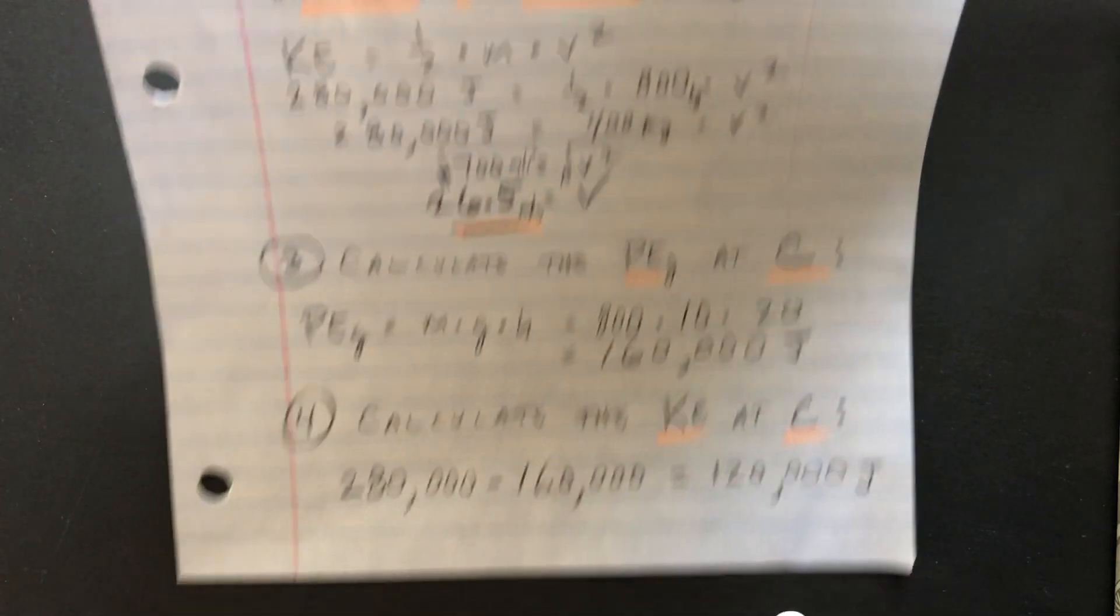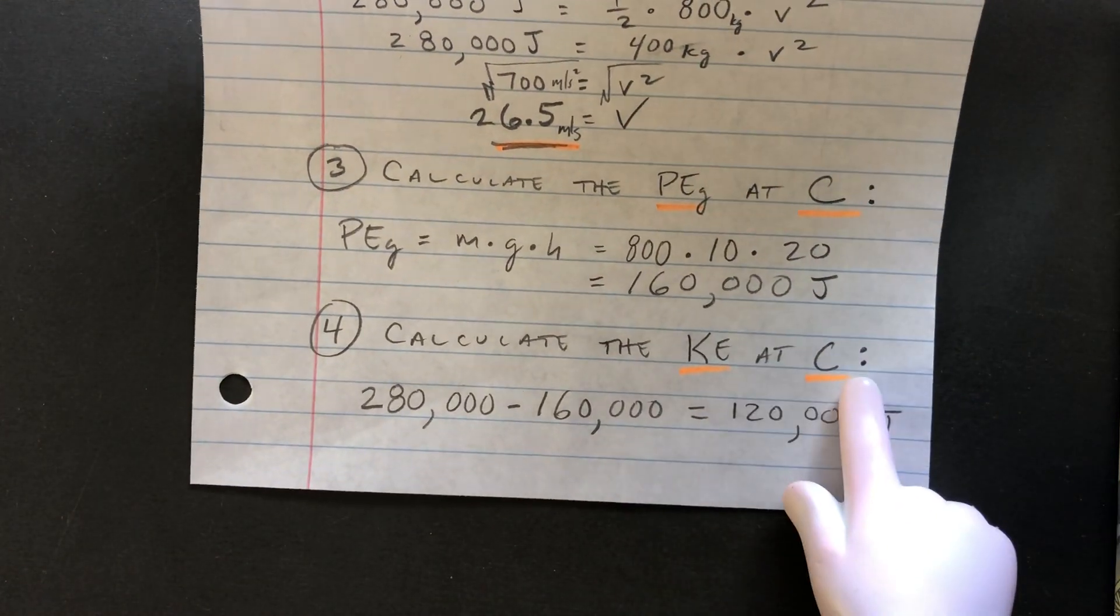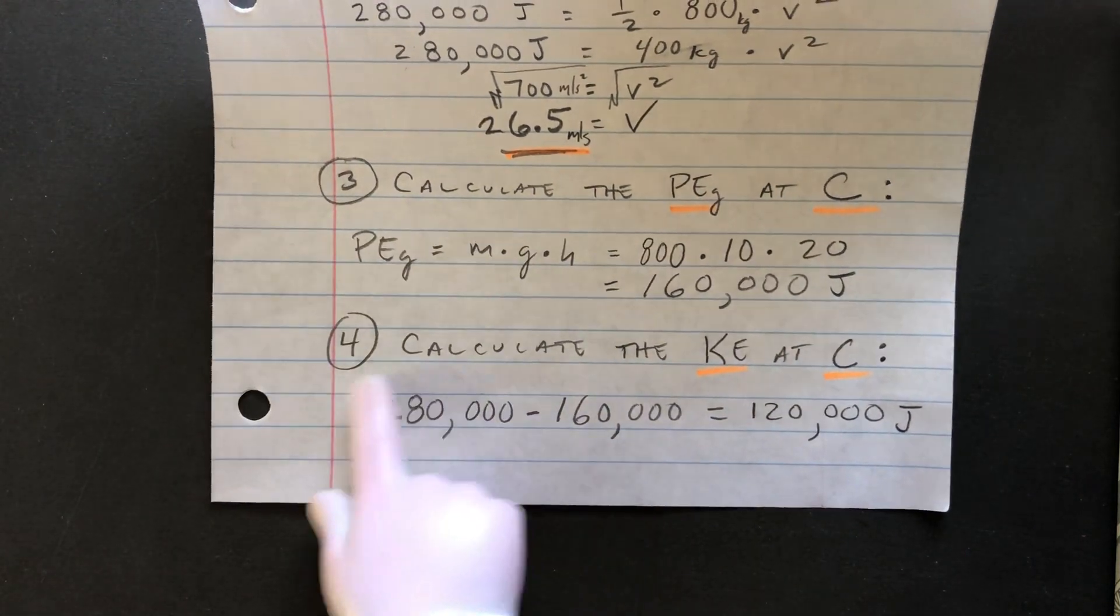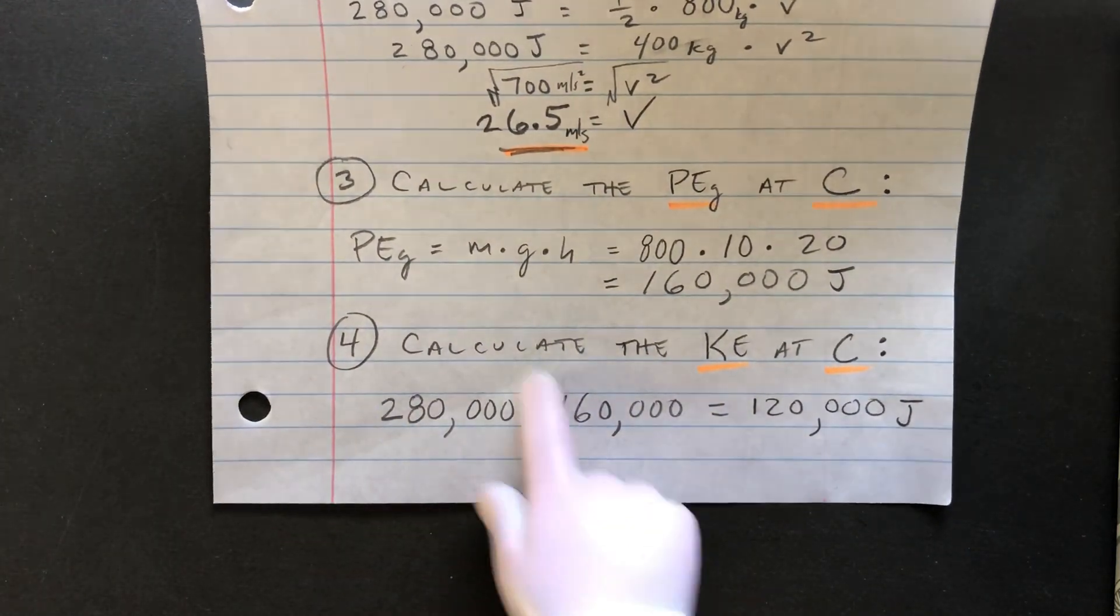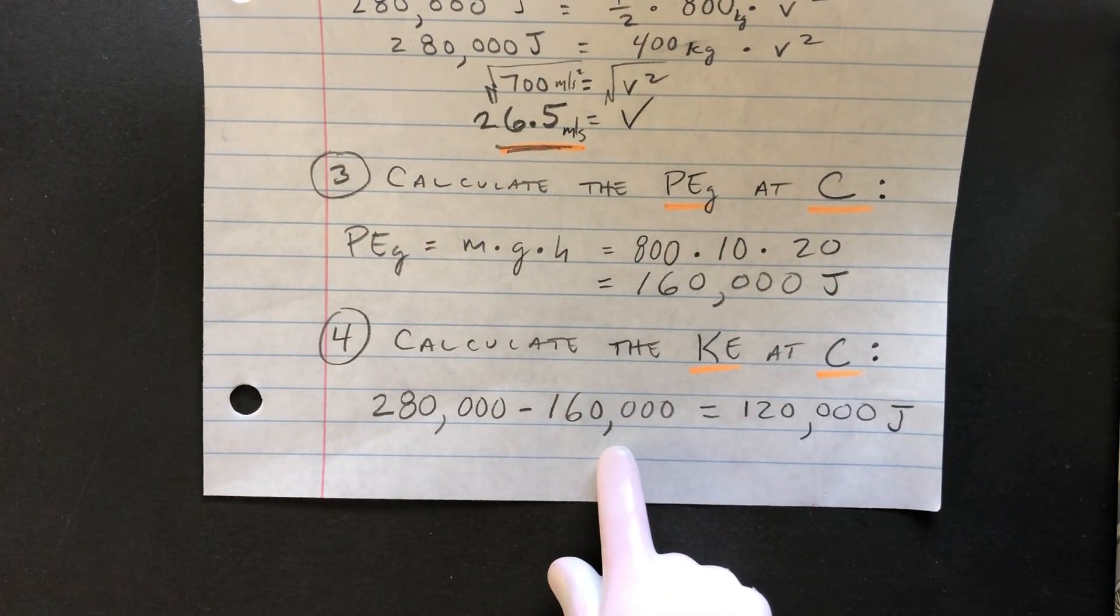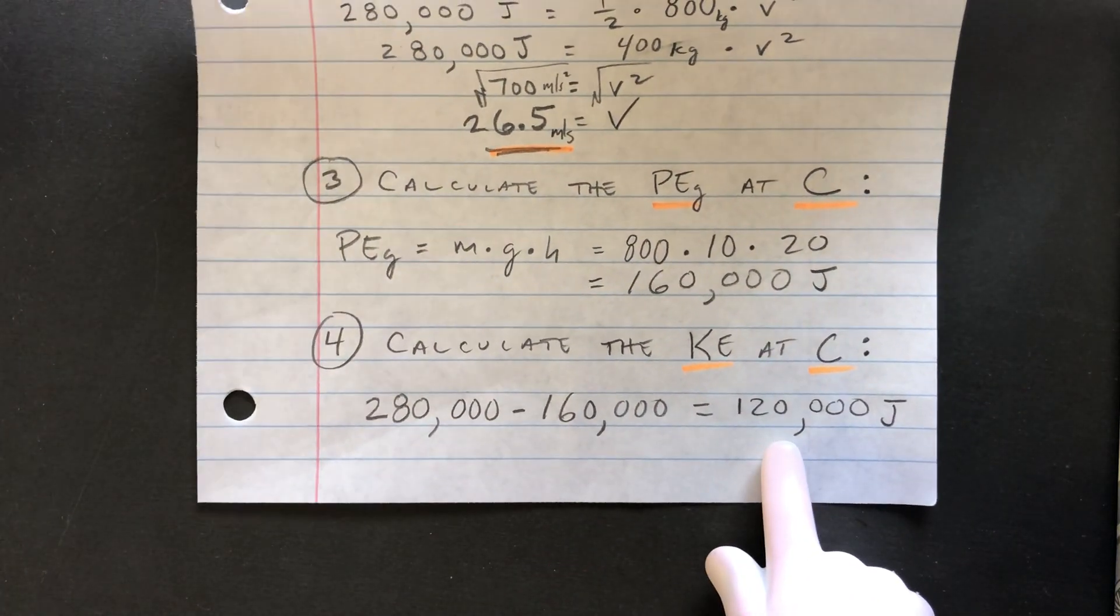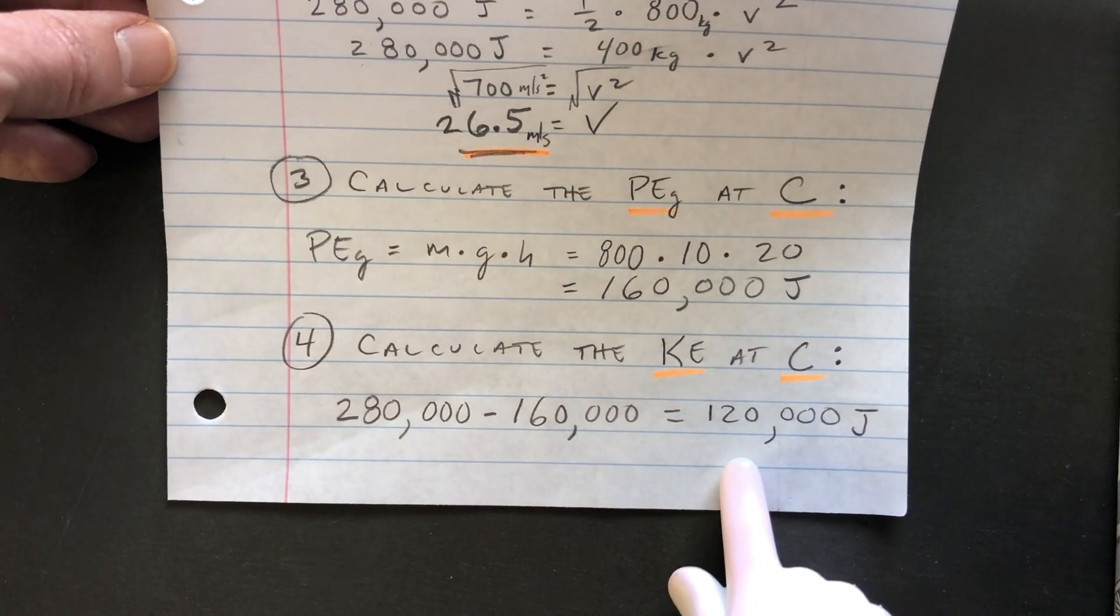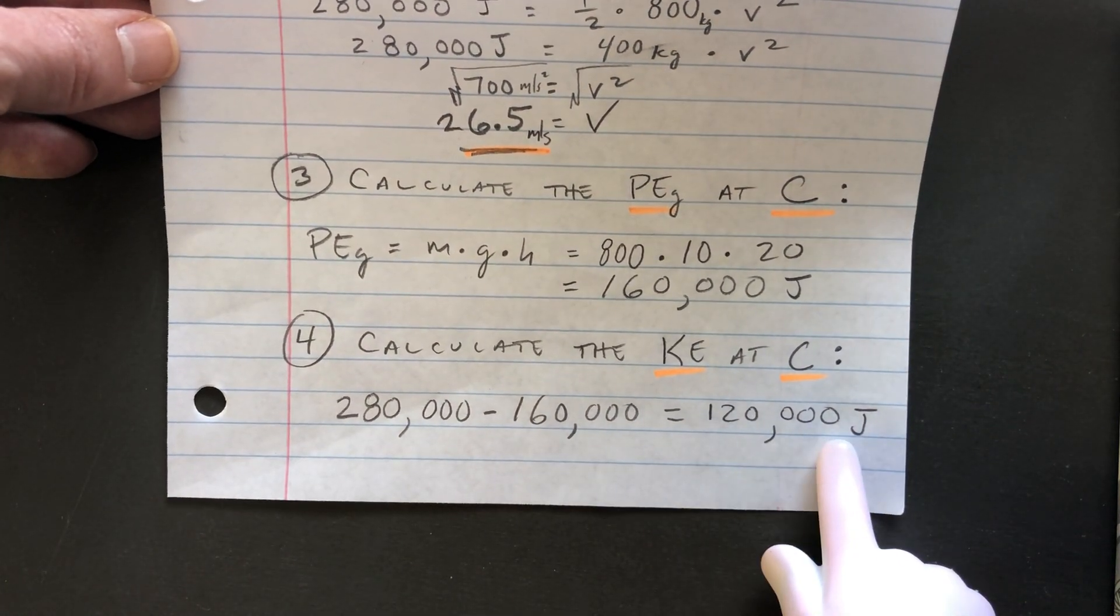And then if you wanted to calculate the kinetic energy at C, you would just take the total energy, the 28,000, and subtract the potential energy because the other half would be kinetic energy. So the kinetic energy at C would be 120,000 joules.